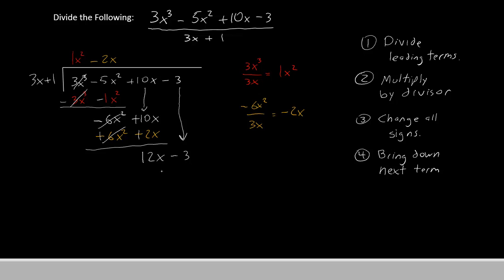Our leading term now is 12x, and we divide by the 3x. 12 over 3 is 4, and x divided by x cancels out, so we have just 4.